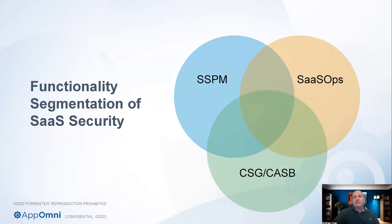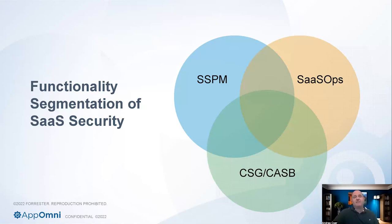If you look at SaaS security, there is definitely SSPM — software as a service security posture management — but there's also SaaS Ops, which revolves around a broader context including cost control, usage requirements, and deployment requirements, not just security-related artifacts. And there are also CASBs — cloud access security brokers — whether proxy-based or API-based, which help you control applications. What I want to convey with this Venn diagram is that these tools are almost going to be required in some combination with each other to provide a layered set of controls to protect software as a service applications.